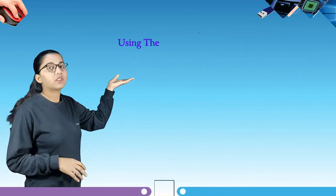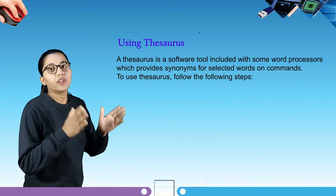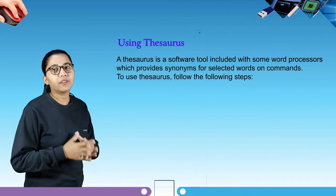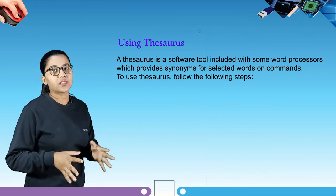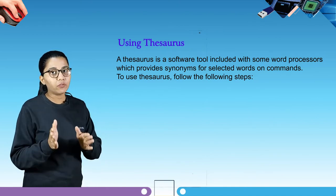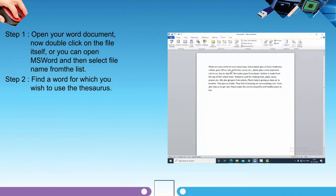Our next topic is using the Thesaurus. A thesaurus is a software tool included with some word processors that provides synonyms for selected words on command. To use the Thesaurus, follow these steps. Step one: open your Word document by double-clicking on the file itself, or open MS Word and select the file name from the list.